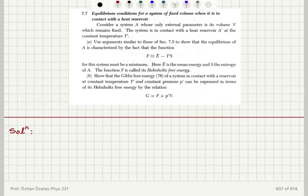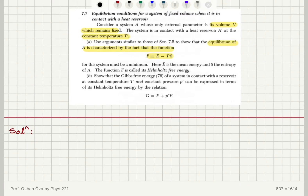Equilibrium conditions for a system of fixed volume when it is in contact with a heat reservoir. Consider a system A whose only external parameter is its volume V, which remains fixed. The system is in contact with a heat reservoir A' at constant temperature T'. Using arguments similar to those of section 7.5, show that the equilibrium of A is characterized by the fact that E-bar minus T'S, which is the Helmholtz free energy, must be a minimum. Also show that the Gibbs free energy of a system in contact with a reservoir at constant temperature T' and constant pressure P' can be expressed in terms of the Helmholtz free energy by the relation F plus P'V.